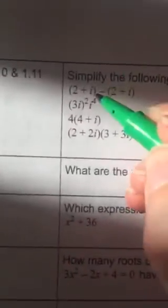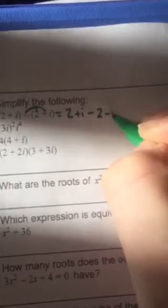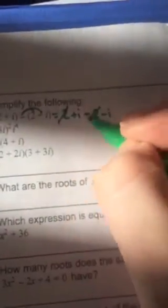Simplify the following. On the first one, we're subtracting. Distribute that in, so we have 2 plus i minus 2 minus i. The 2s cancel out, and the i terms cancel out, so you're left with nothing.